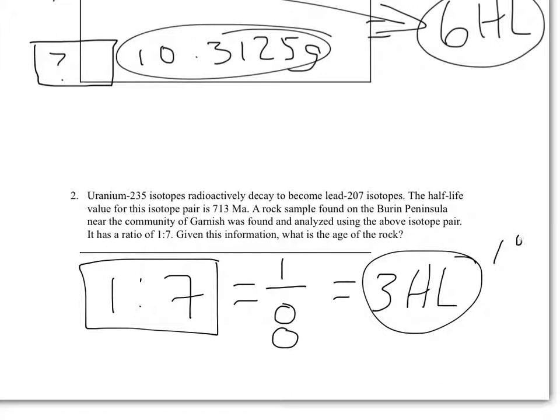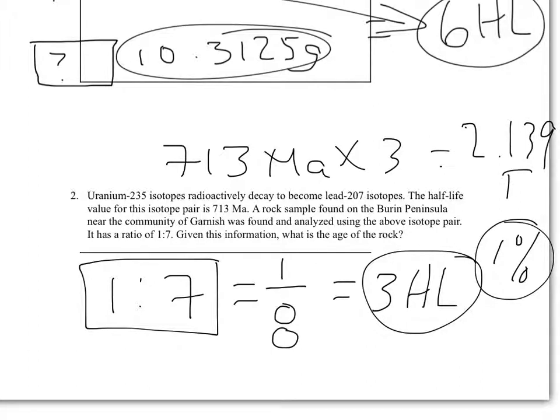So we're going to get points for determining that there's three half-lives that have occurred. So now what we're going to do, we know the time that it takes for one half-life, which is 713 million. So we're going to multiply that by 3. And so when we do, we get 713 multiplied by 3. And the age of the rock is 2.139 billion years.